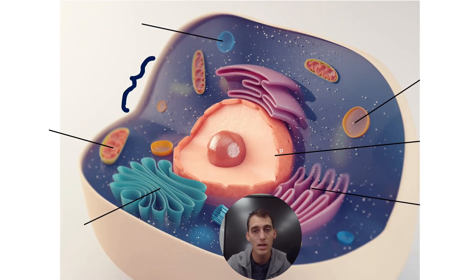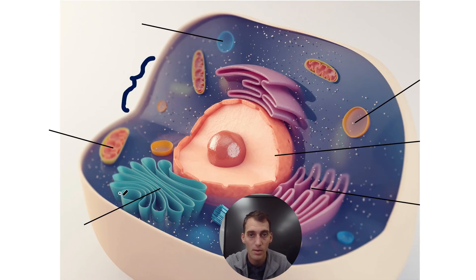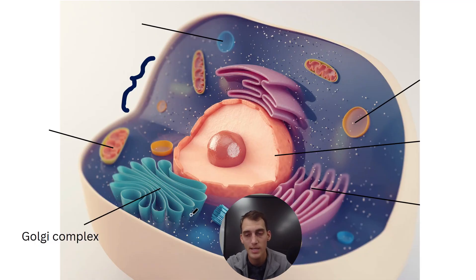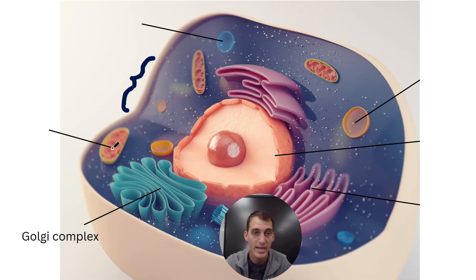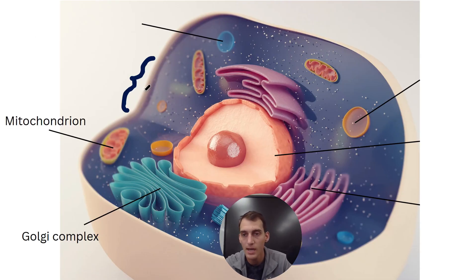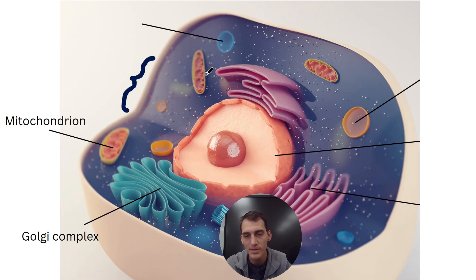Now we have an animal cell — things are in slightly different positions here. We have our shipping center with flattened membranes receiving products from the endoplasmic reticulum — that is the Golgi complex. The powerhouse of the cell with a folded inner membrane and smooth outer membrane — that is the mitochondrion. The small dots speckled throughout the cytoplasm — the fluid that fills the cell — responsible for making proteins are called ribosomes. And note that plant cells also have ribosomes.